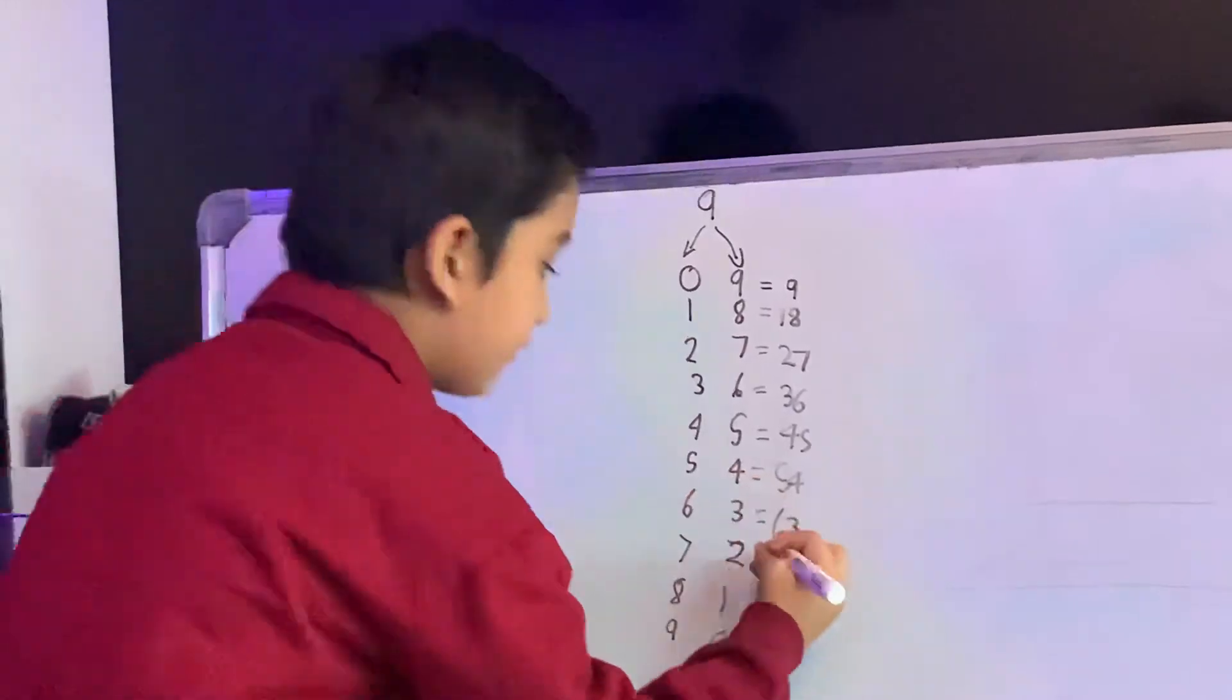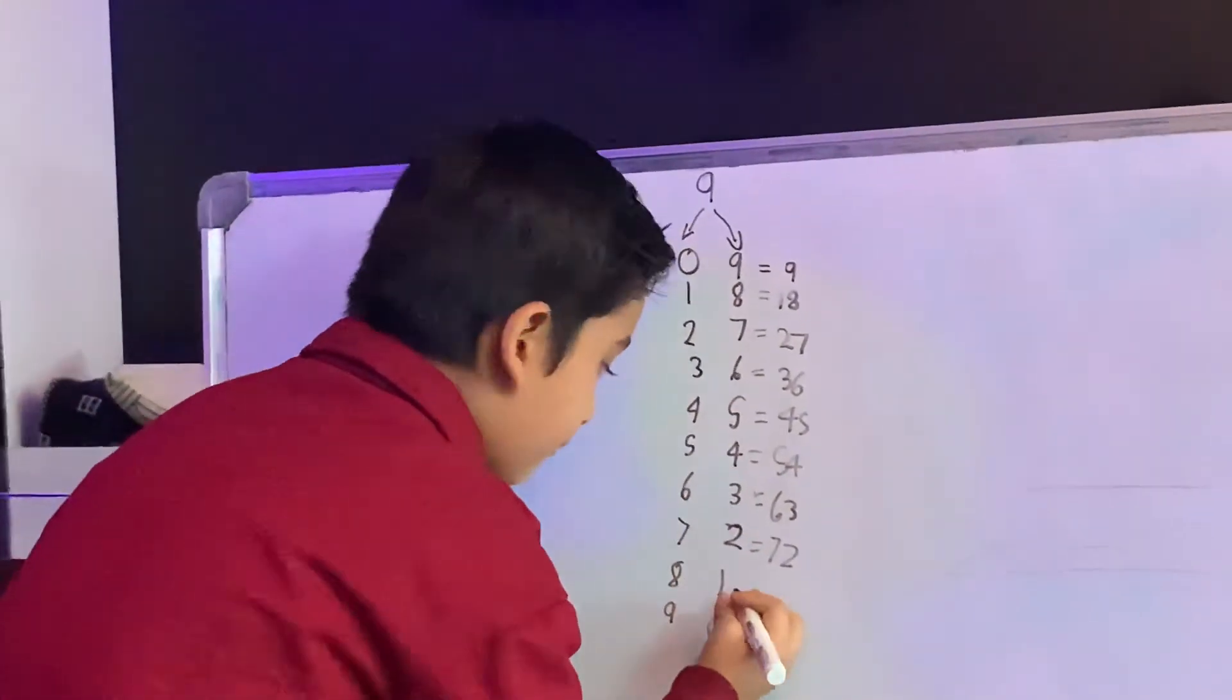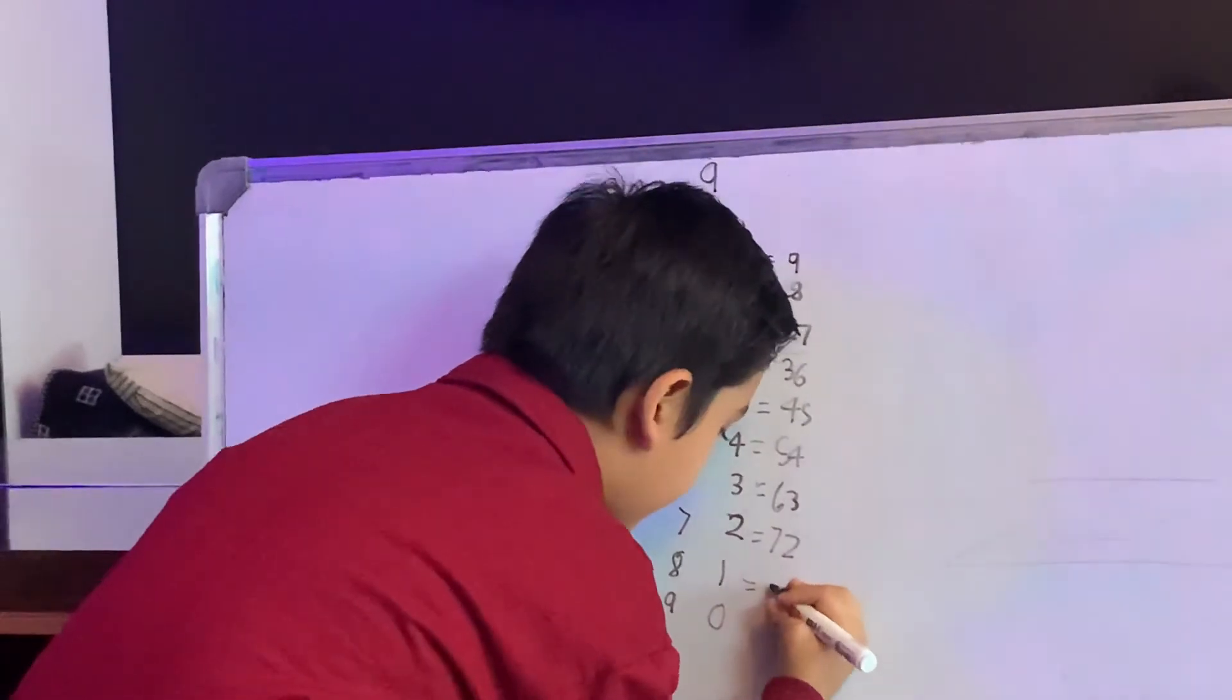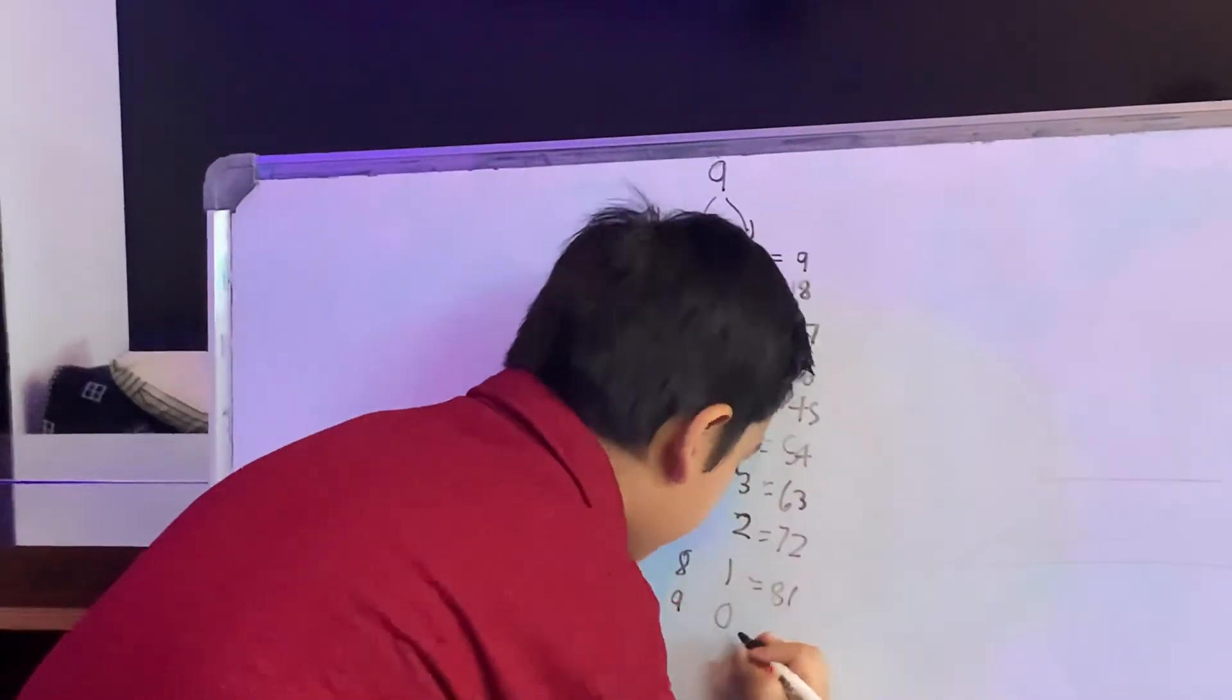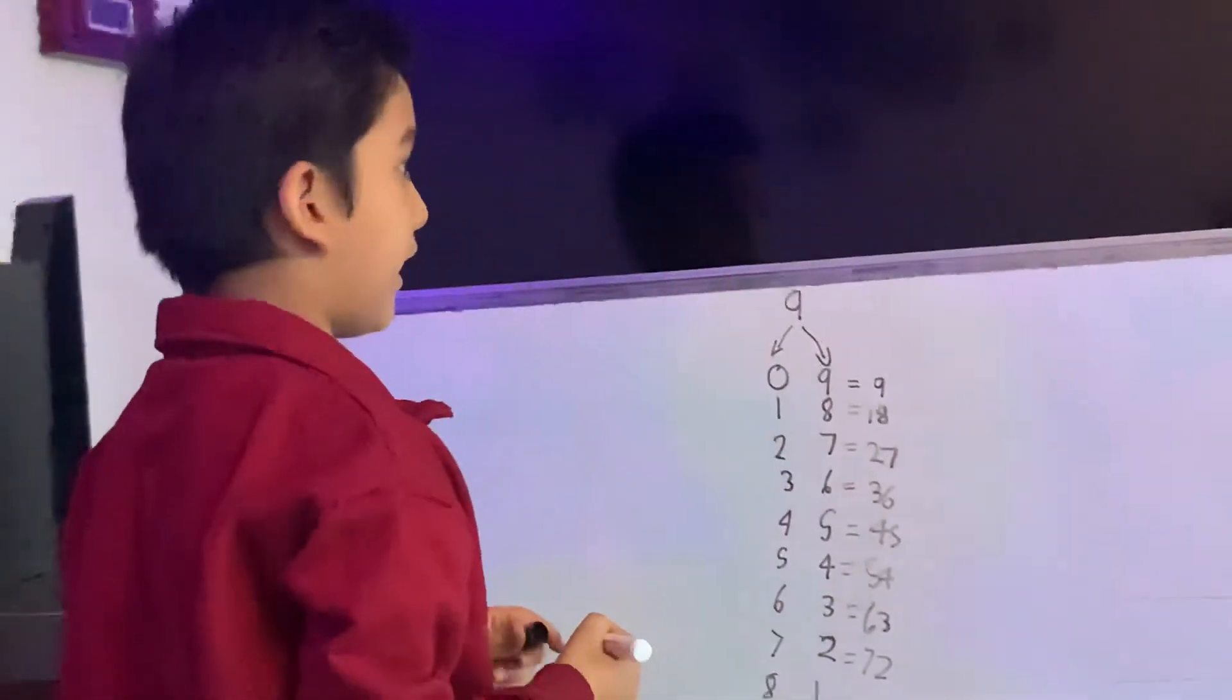7, 2 is equal to 72. 8, 1 is equal to 81. 9, 0 is equal to 90.